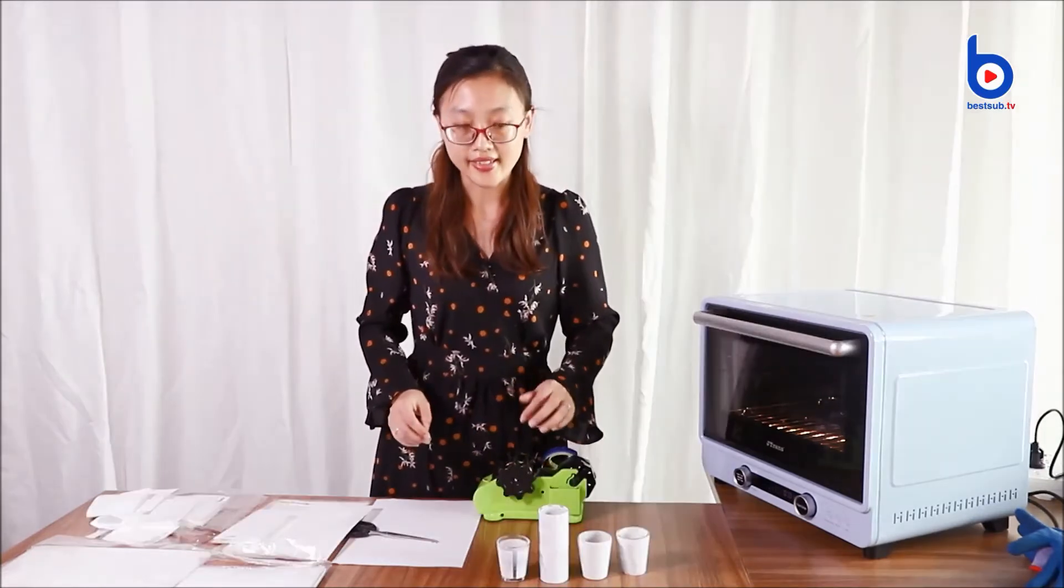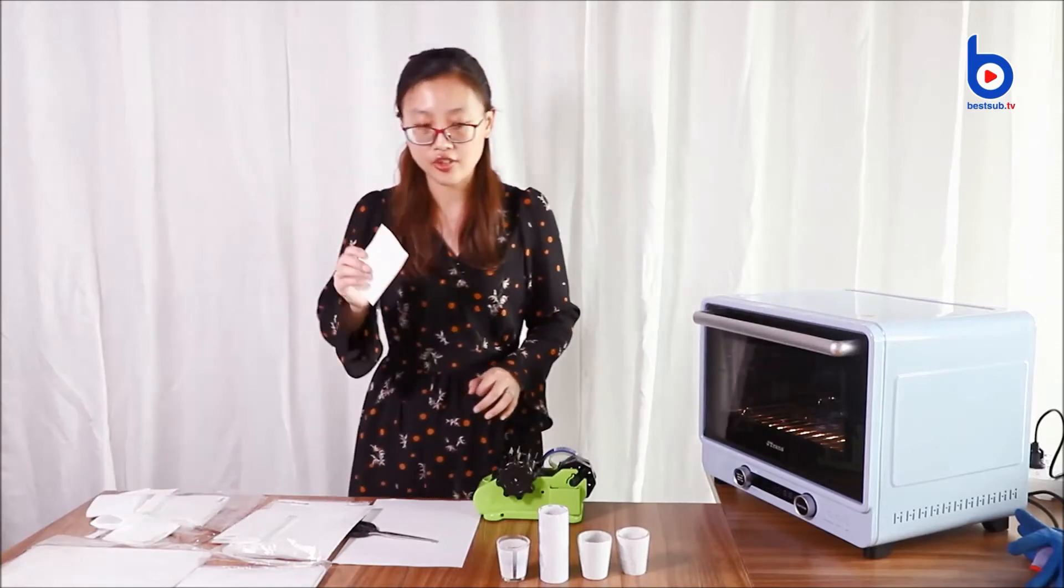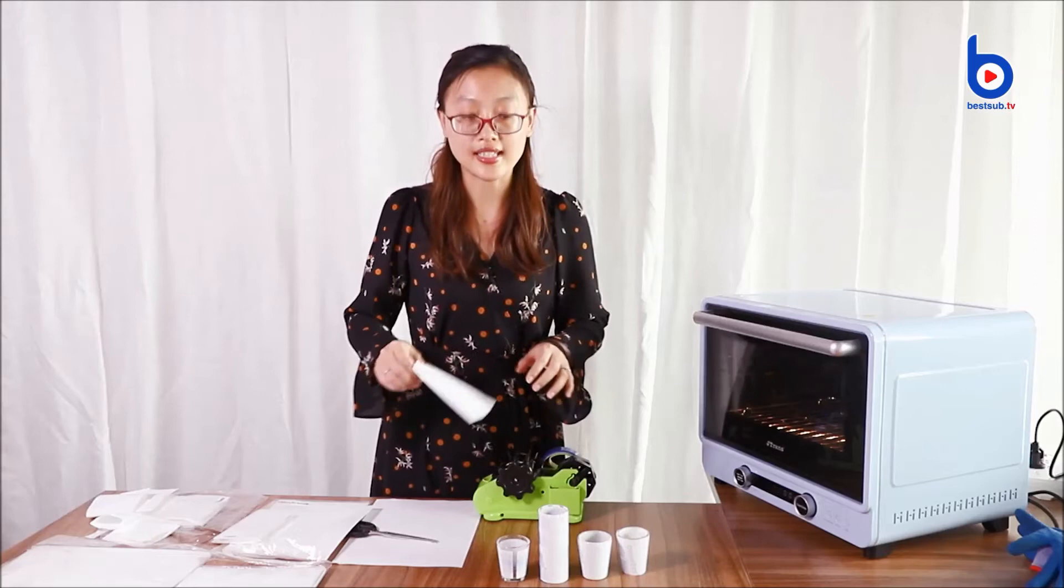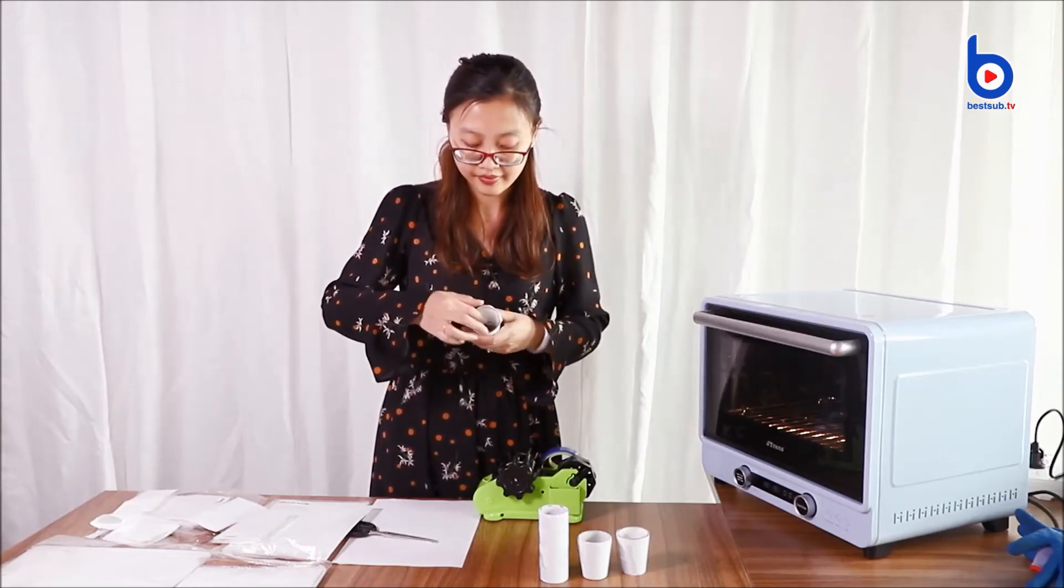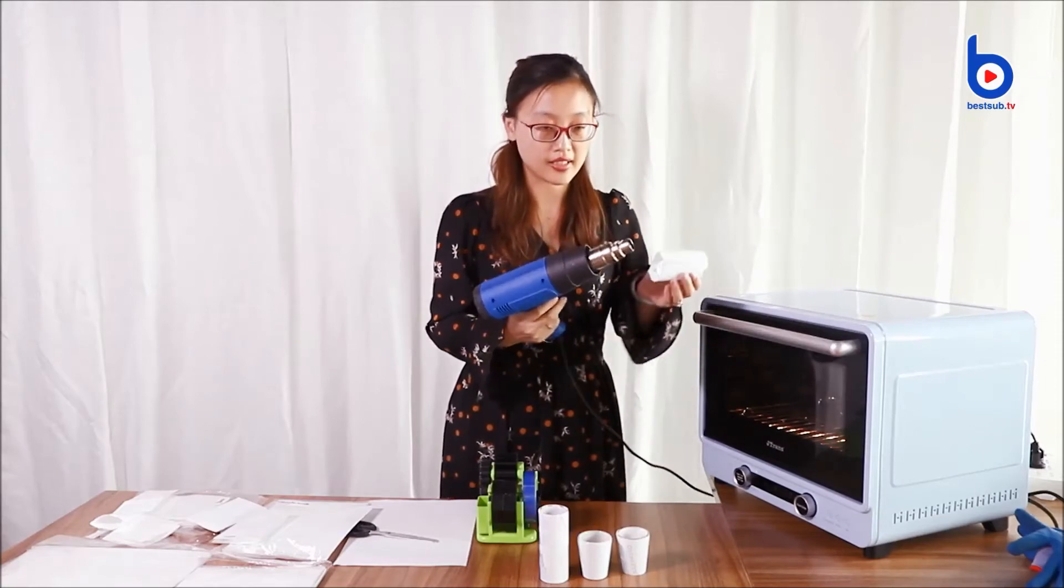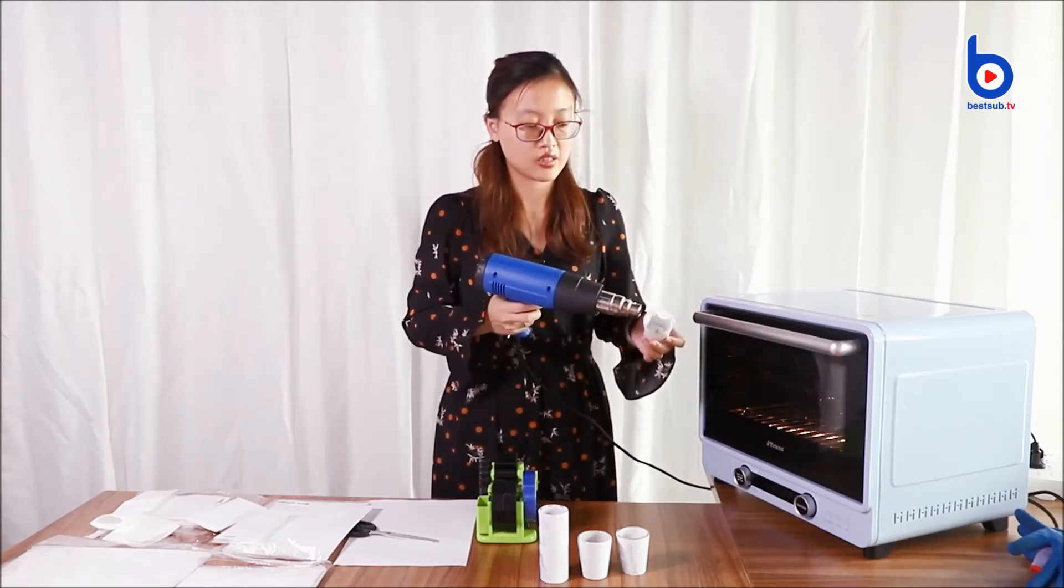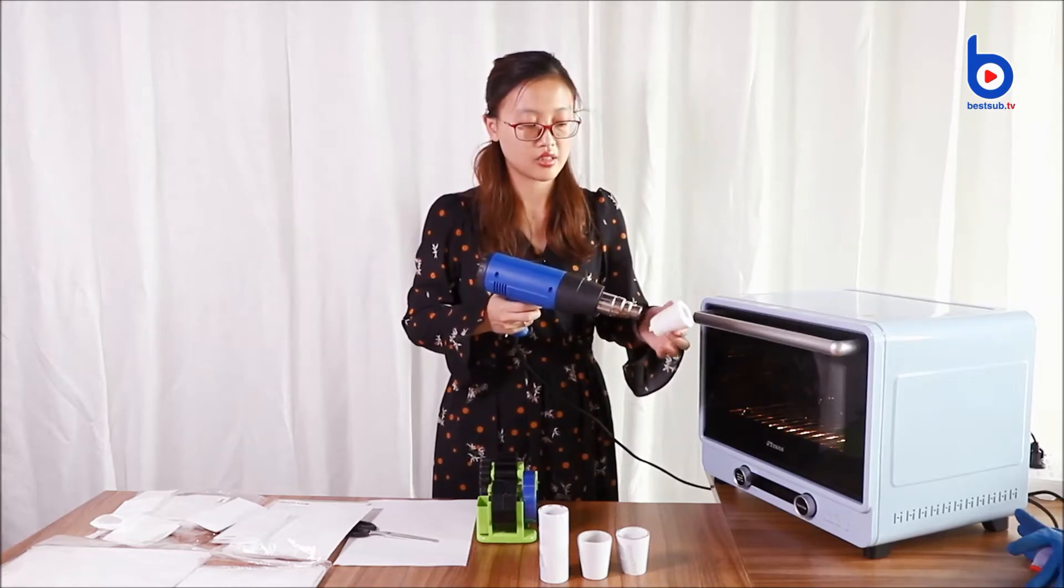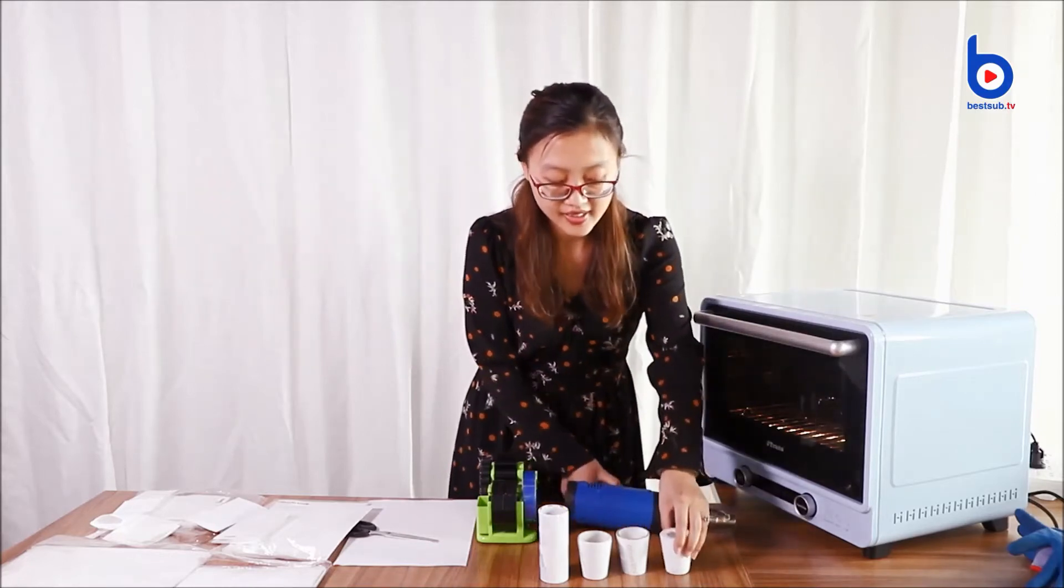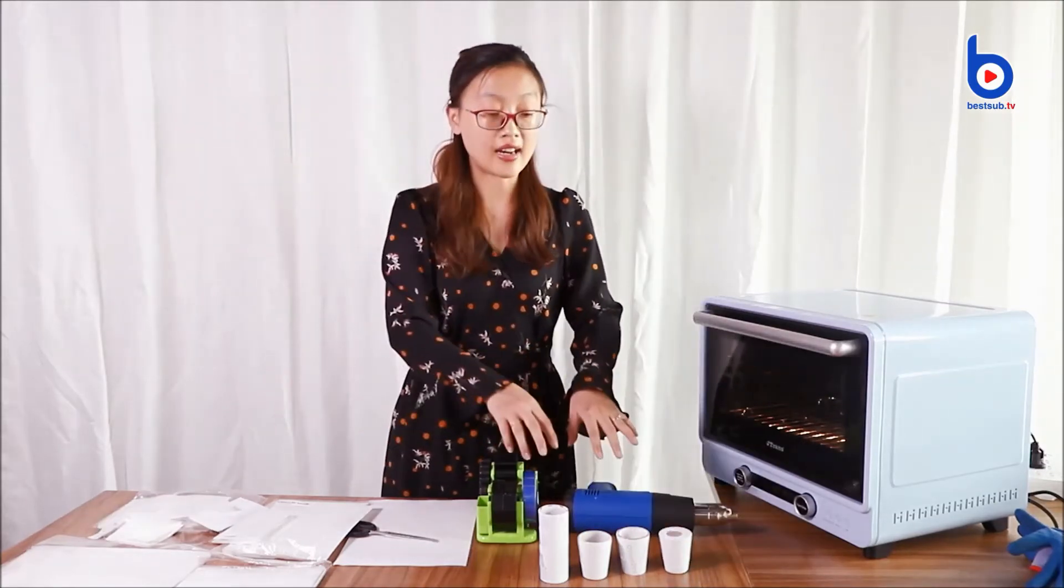The next step is that we choose the right size film, shotgun film, to put this shot glass inside. Now we use the heating gun to make that shotgun film wrap the item. You can see it's quickly and easy. We do the same thing with the other three items.